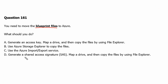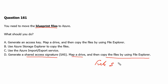Option D is to generate a shared access signature, map a drive, and then copy the files using File Explorer. This method is used for File Share, and that is not recommended for storing blueprint files, so it is not the correct answer. Option C is to use the Azure Import-Export Service, which is used for large amounts of data and is not preferred in this case.